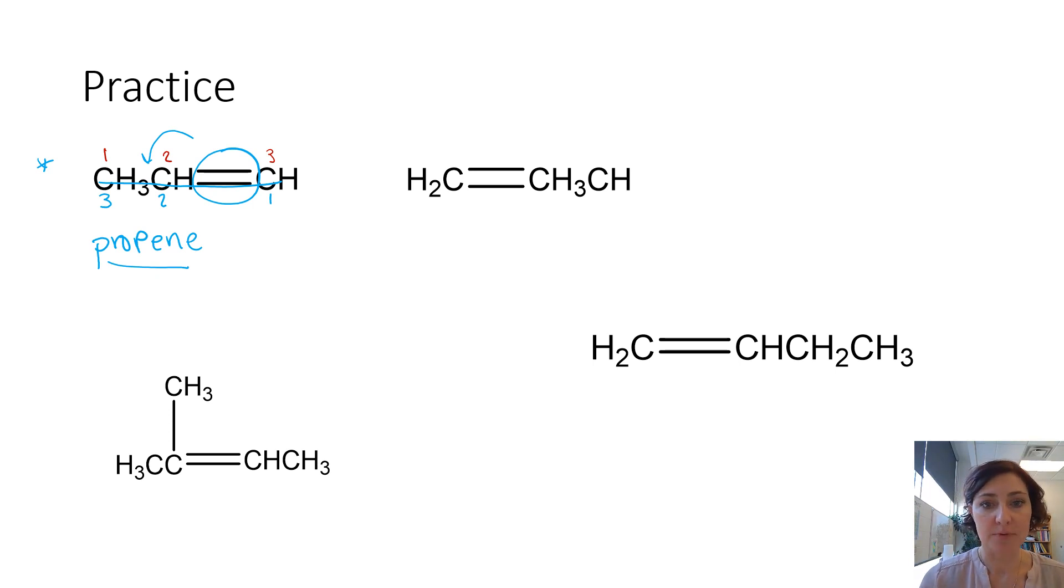In our next example, drawing a line through the longest continuous chain that contains the double bond, counting the number of carbons, one, two, three. Again, notice these are the exact same molecule, but here we have the double bond in a different location. So we've kind of swapped it, we've turned it on its side.